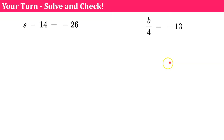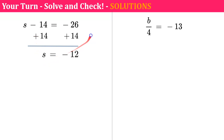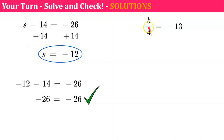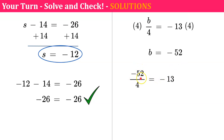Here are the last two problems — pause, solve, check, and come back. Welcome back. The inverse of subtract 14 is to add 14 to both sides, leaving s is equal to negative 26 plus 14, which is negative 12. Let's check: negative 12 subtract 14 — remember, add the opposite — negative 12 plus negative 14 is negative 26. It checks, and s equals negative 12. Our last problem: b divided by 4 — the inverse of divide by 4 is to multiply both sides by 4. So b equals negative 13 times 4, which is negative 52.